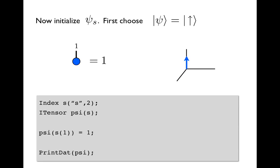And then into the index we plug the number one. And so what this does is it creates a temporary object, s of one, which encapsulates the idea of setting this index to its first value. And so we temporarily think of setting s to one, plugging that into psi to access the first component of psi, and then setting that first component to one.